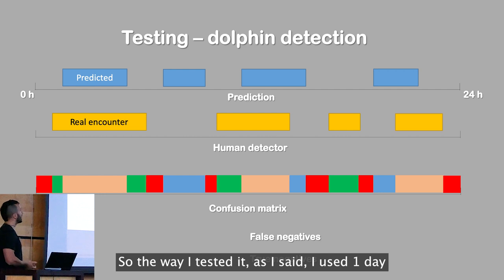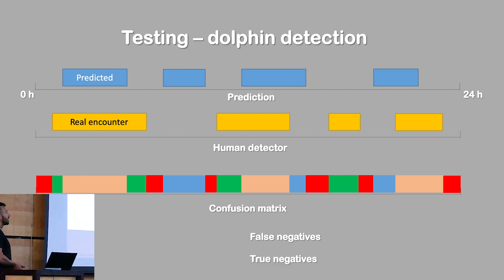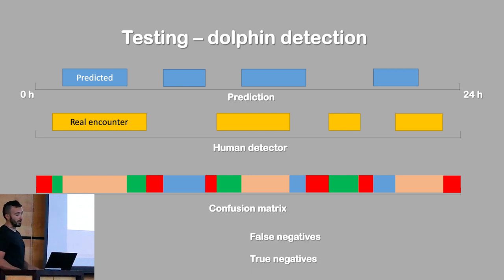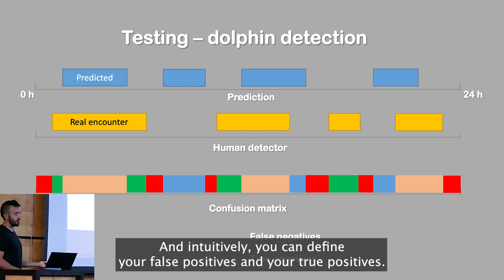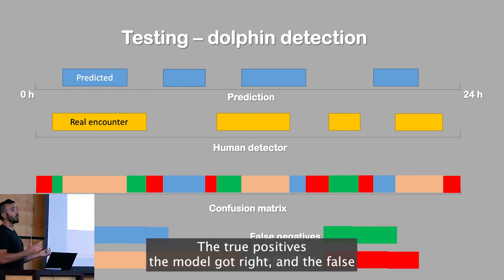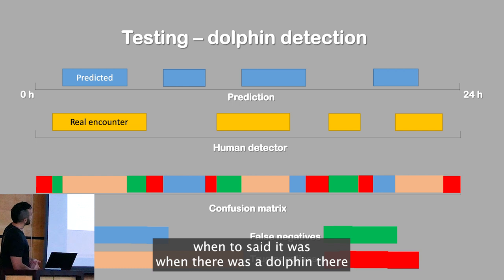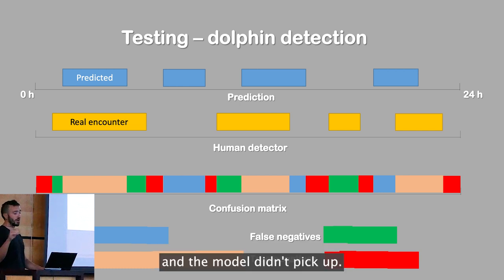The way I tested it, as I said, I used a one-day ground truth and compared the results from the model against the human detector. You can define your false positives, true positives, and false negatives — for example, a false negative is when there was a dolphin present but the model didn't detect it.